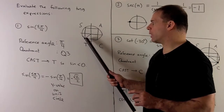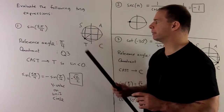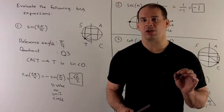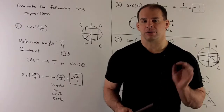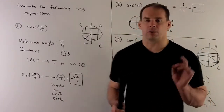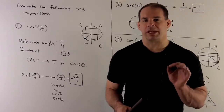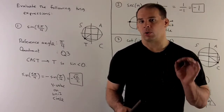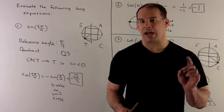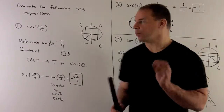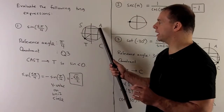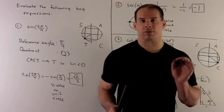If I add another π over 4, we wind up on this angle here. To get the sine, we want to identify the reference angle and the quadrant. From our picture, we're in quadrant 3. The reference angle is going to be the angle in quadrant 1 which has the same cosine and sine but without the minus signs — that's going to be π over 4.